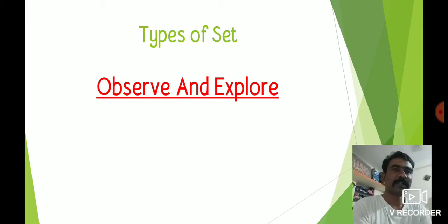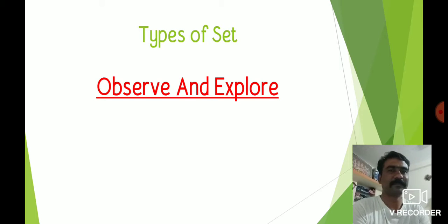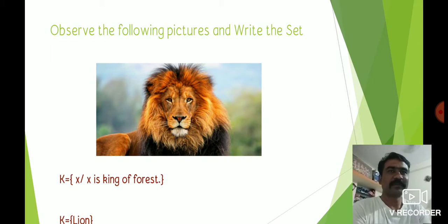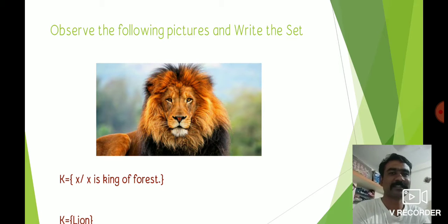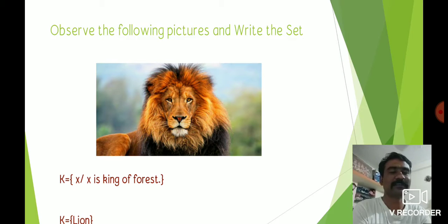Now see the types of sets. Observe the following picture and write the set. In the picture there is one lion, and we can write the set as K = {x | x is a king of the forest}. In this set there is only one element, which is the lion.